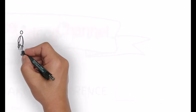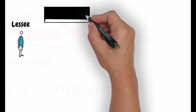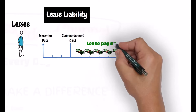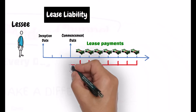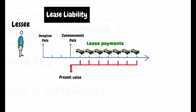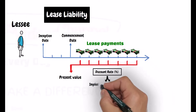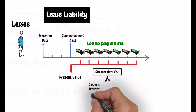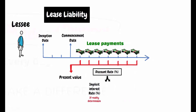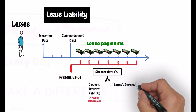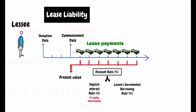IFRS 16 requires the lessee at the commencement date to measure the lease liability at the present value of the lease payments that are not paid on that date. These lease payments should be discounted using the interest rate implicit in the lease if that rate can be readily determined. Otherwise, the lessee's incremental borrowing rate should be used.